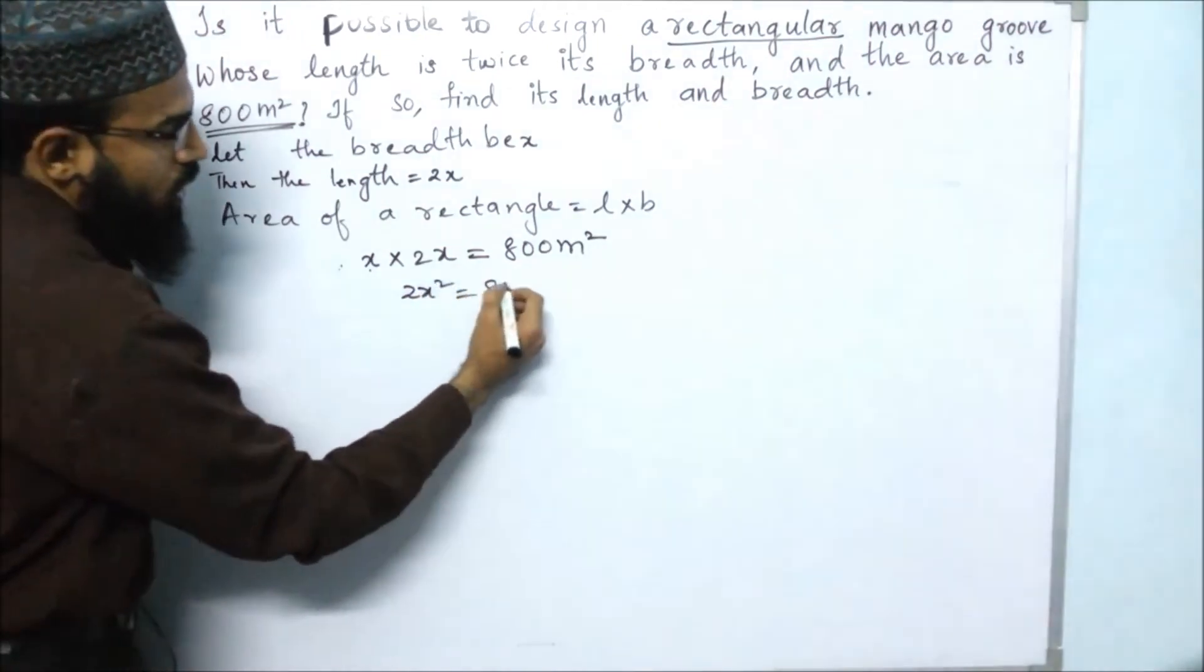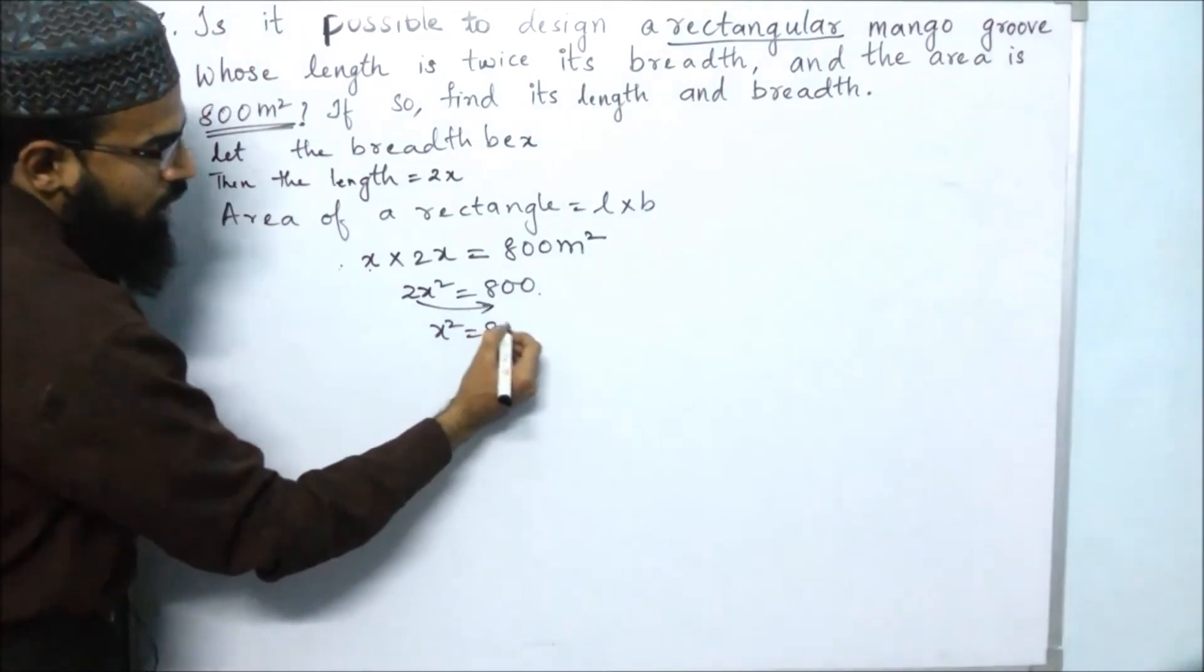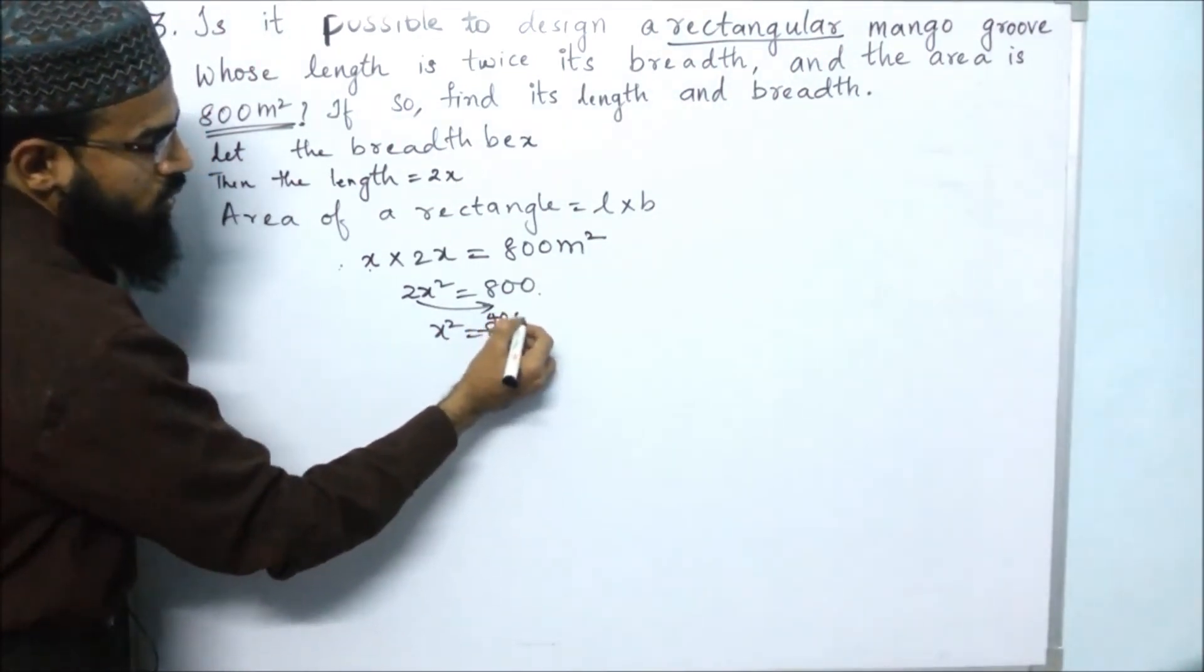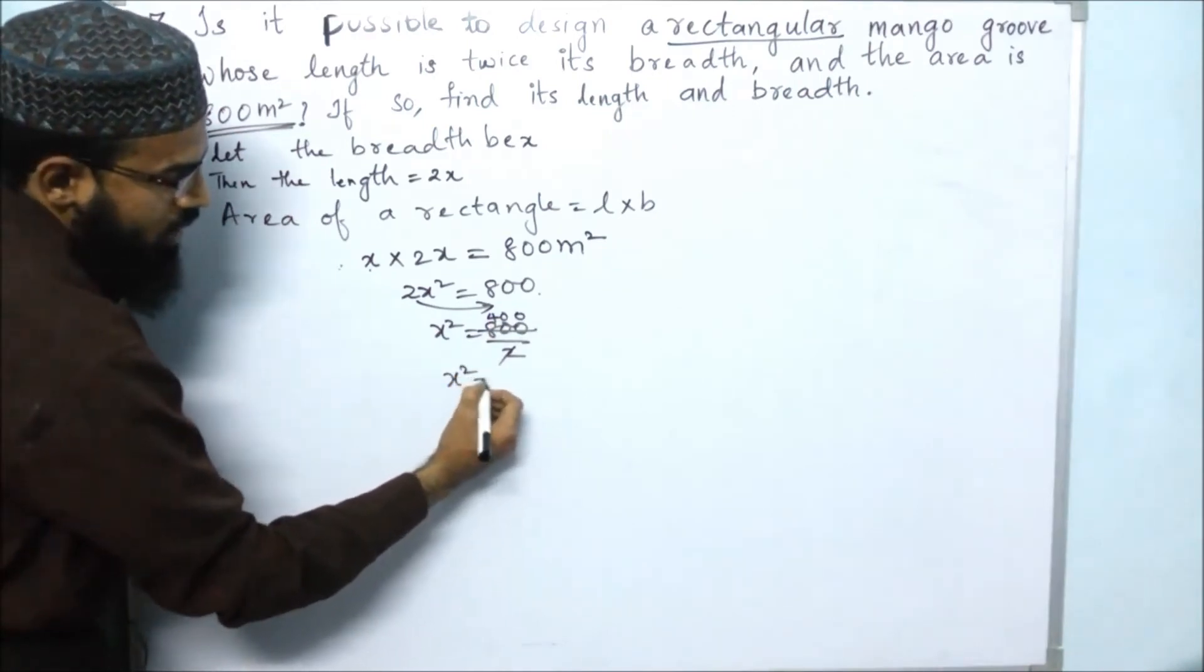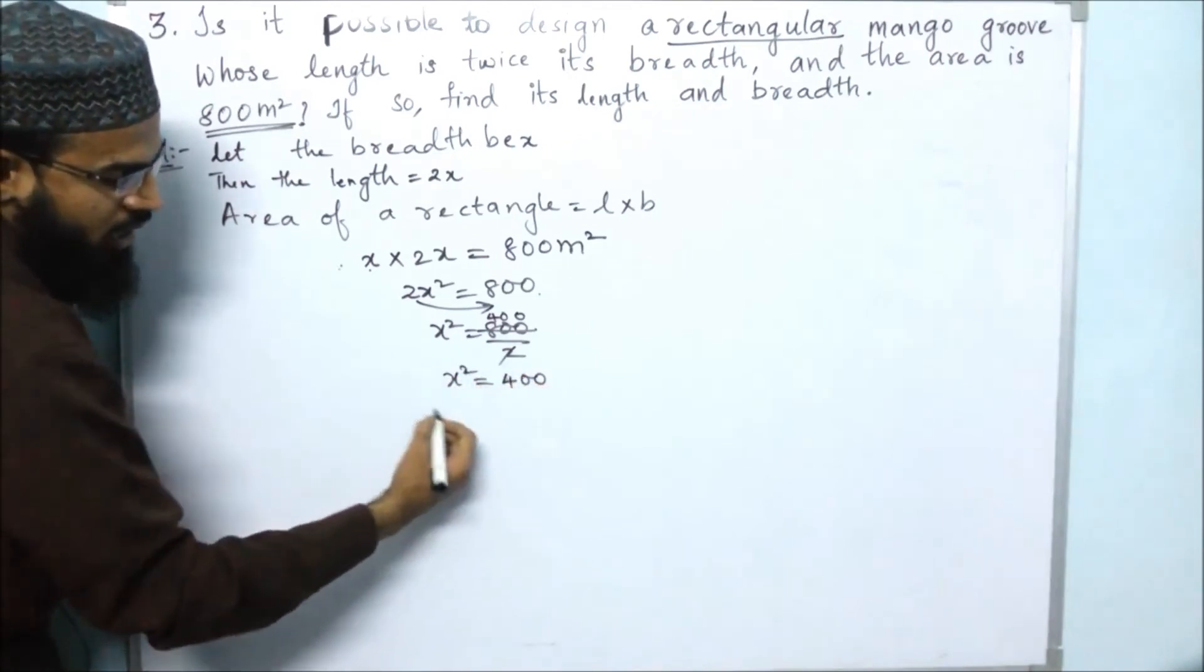This 2 goes down, so x² equals 800 divided by 2. 800 divided by 2 is 400, so x² equals 400.